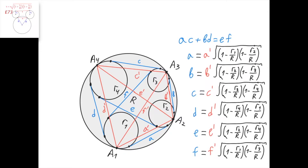Now we can apply the Mickey Mouse lemma six times. The first time for segment A, which equals A' times the square root of (1 minus R1 over R) times (1 minus R2 over R). Then we apply it for B and B', C and C', D and D', and also for the diagonals E and E', and F and F'. We get these six equalities.